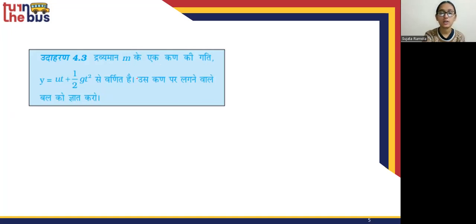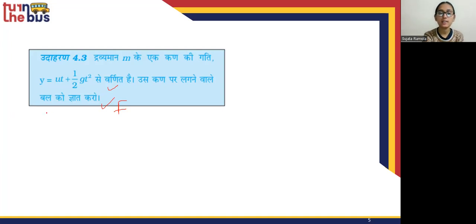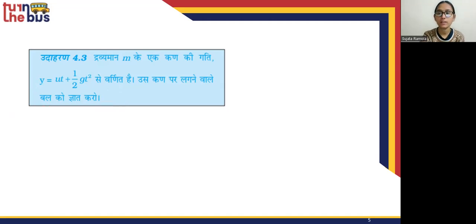We are going to derive the displacement formula: y = ut + ½gt². Here, y is the displacement. This is the same derivation we can do, and we can derive the same result.